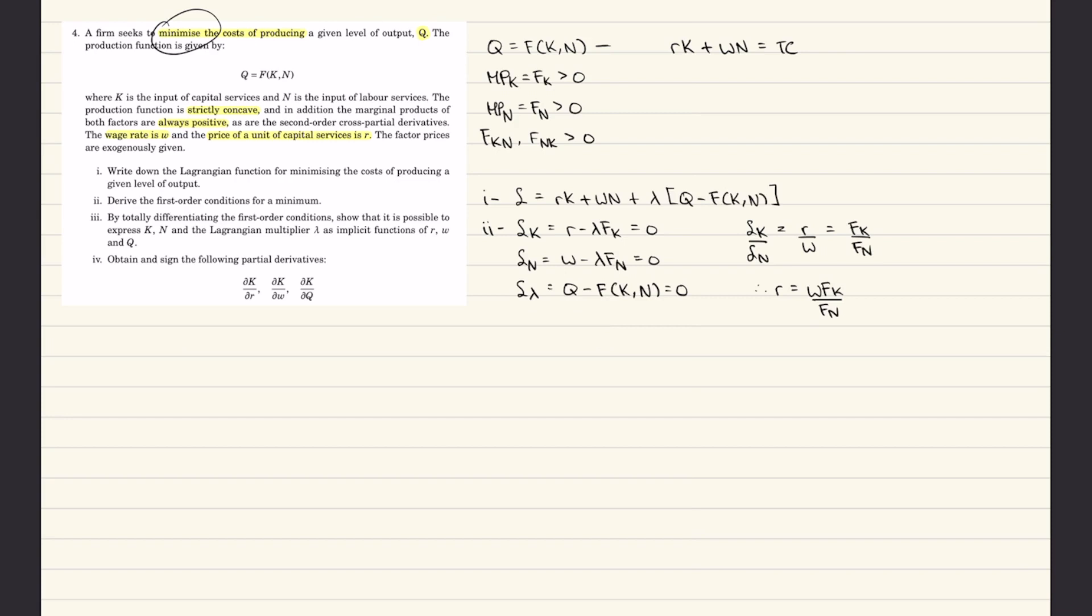For part three, this is where I got really confused and was like what the hell is happening. It says by totally differentiating the first order conditions, show that it is possible to express k, n, and the Lagrangian multiplier as implicit functions of r, w, and q. What you want to do with these types of questions is see what you want to express it as. It says implicit functions of r, w, and q - that basically means everything on your right side should contain r, w, and q because you want your Jacobian on the left and then on the right side things to substitute in and use Kramer's rule to find the partial derivatives, which is what you do in part four.